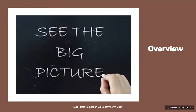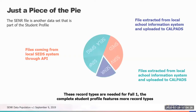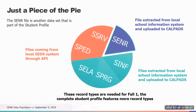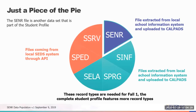Let's begin with the overview so you can see the big picture. The student enrollment file type, which we commonly call the SENR, is just a piece of the puzzle. The student profile is made up of the SENR and several other data types or record types. What you see before you are the record types required for Fall 1 reporting.